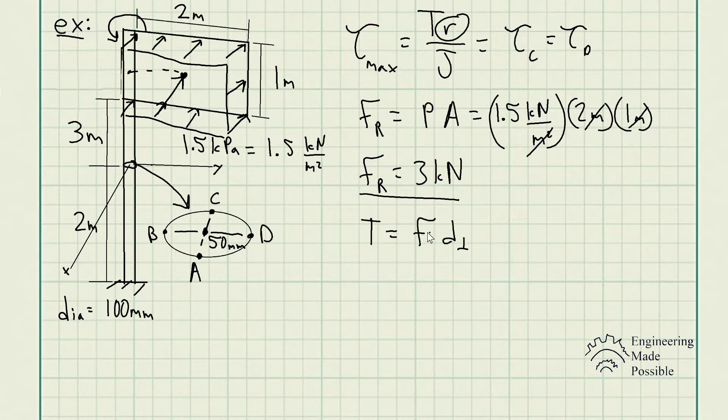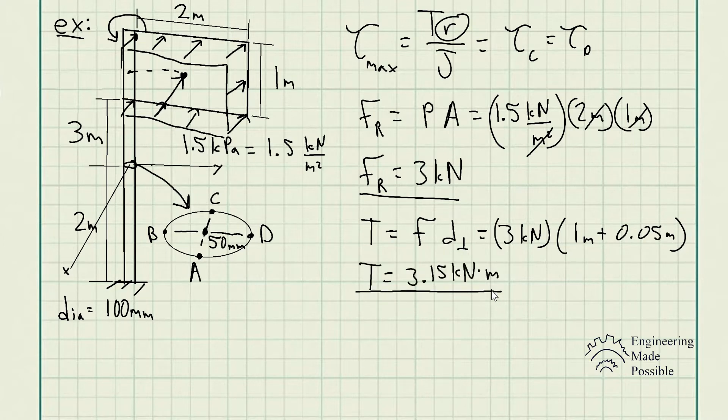The equation of torque is force times the perpendicular distance to the post, which gives us 3 kilonewtons times 1 plus 0.05 meters, which gives us a torque of 3.15 kilonewton meters. This is the torque we're going to use to plug into the maximum shear stress due to torsion and solve for the maximum shear stress.